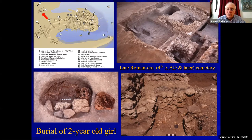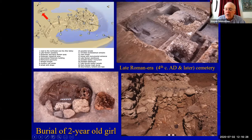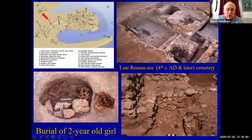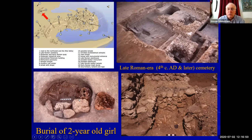The formal cemeteries tended to be, as was common in Roman, Hellenistic, and Greek periods, on roads leaving urban centers. This partial cemetery we excavated in 2001, and it included this little cist burial of a two-year-old girl who was covered with a pot sherd. She'd had a burial shroud and she also had some beads buried with her.